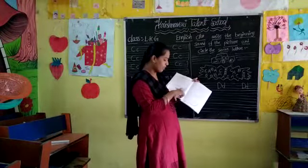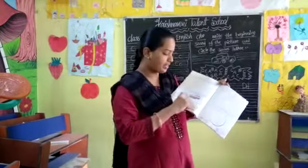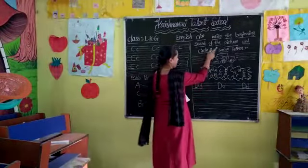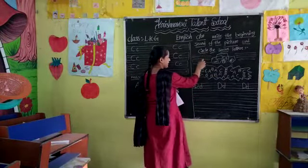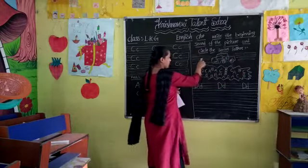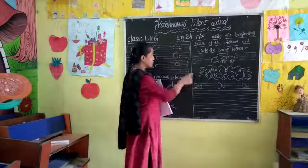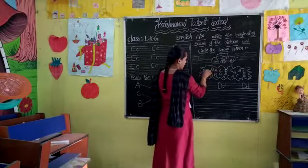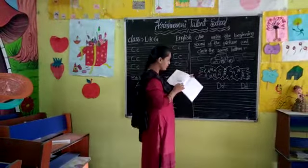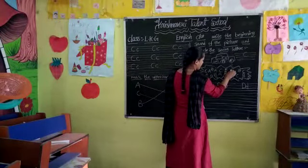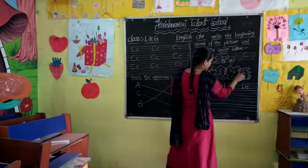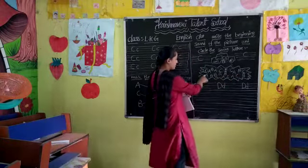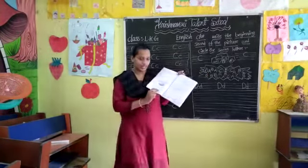In that page now, write the beginning sound of the picture and circle the same letter. What is this picture? Car. We have to write the beginning sound of the picture — car. We have to write C. What is the beginning sound of the picture? Car. We have to write C. At the beginning sound of the picture, circle the same letter. What is car? C for car. We have to circle the letter C in that box down there. I circle all the C letter words. You have to circle the letter C.